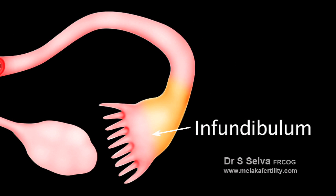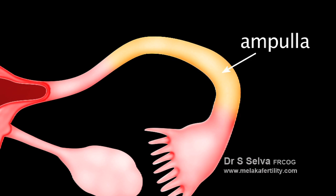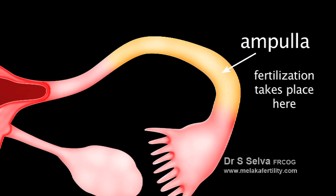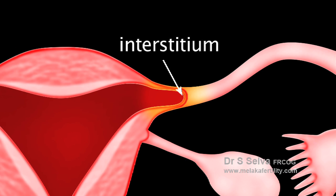The infundibulum is the funnel-like structure of the tube which is margined by the fimbriae. The ampulla is the longest portion of the tube with a thin wall, almost muscle-free, and wide lumen — it is usually the portion where fertilization takes place. The isthmus is the almost straight portion of the tube with a relatively thick muscular wall and the narrowest lumen. The interstitium is the portion of the tube closest to the uterus, sometimes known as the uterine portion, as it lies within the uterus.